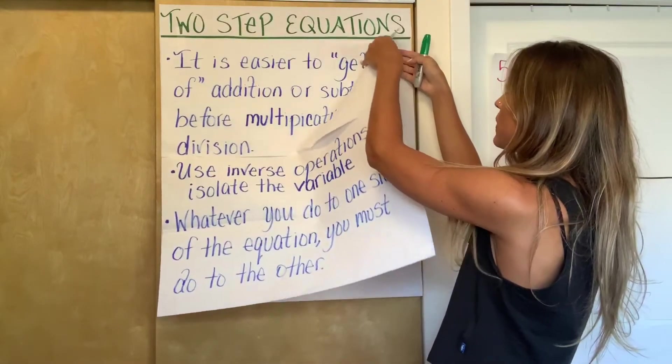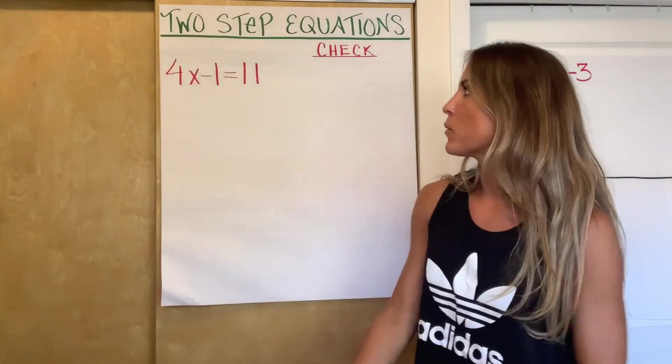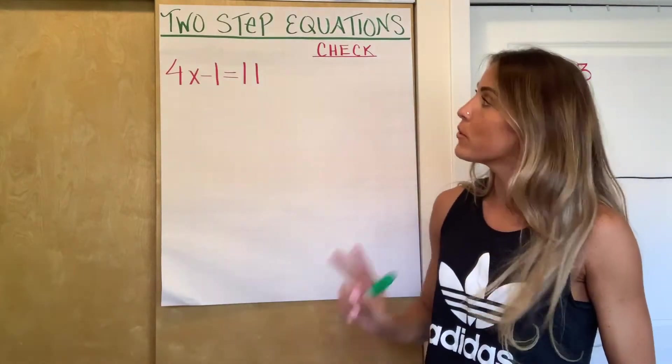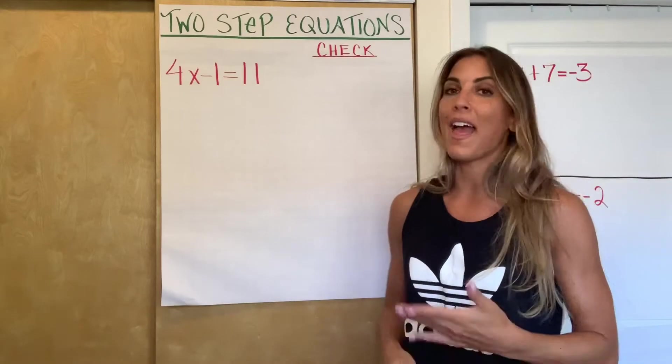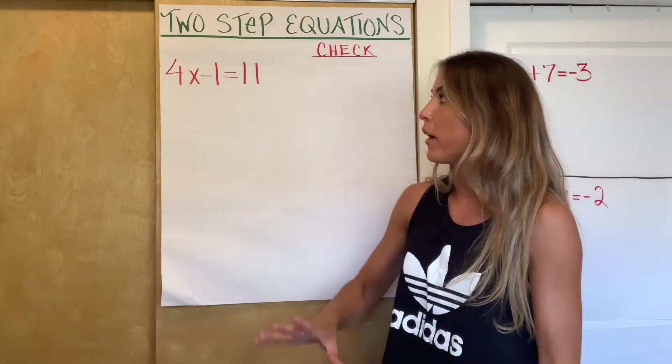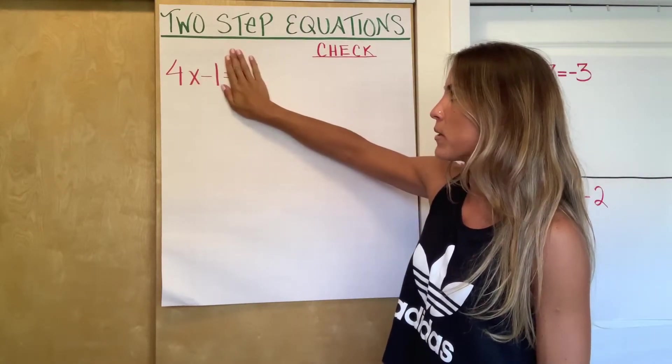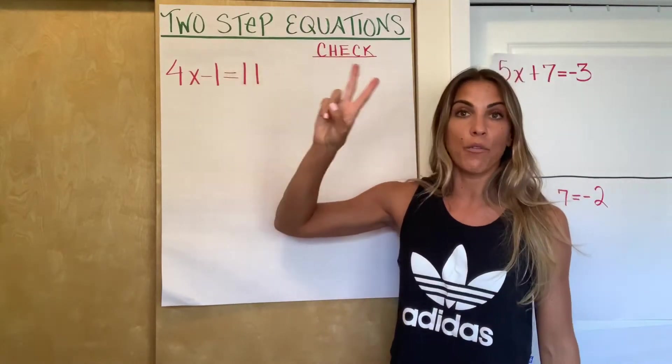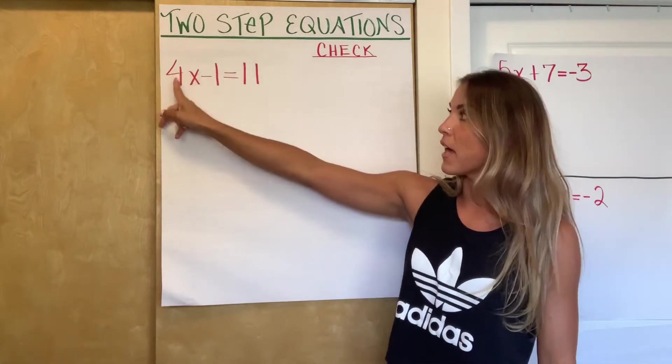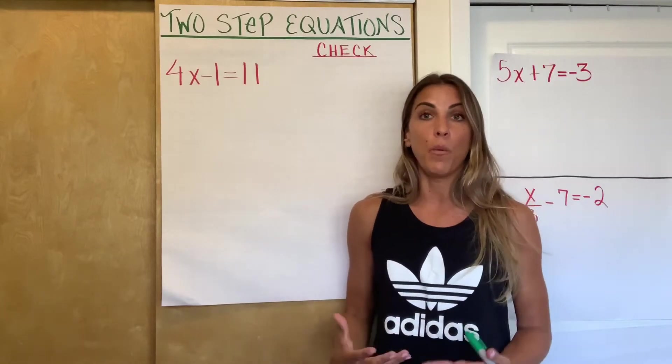So our first two-step equation is going to be fairly simple. 4x minus 1 equals 11. So it's two steps because we have to get rid of two things. We want x by itself. Remember, our goal is always to isolate x, isolate the variable. So right now, x is on the left side of the equal sign. And the two things that we want to get rid of in order to isolate the x is that 4 and that negative 1, that minus 1. And then the x will be by itself like we want it.